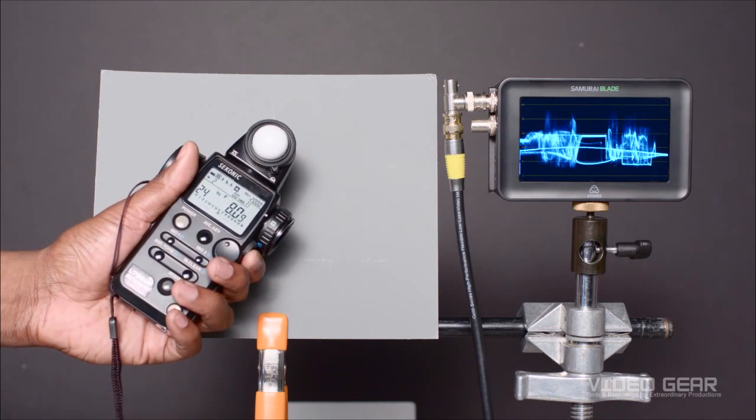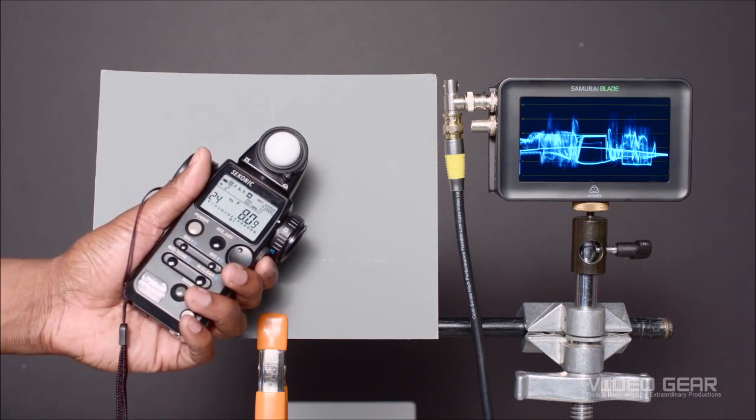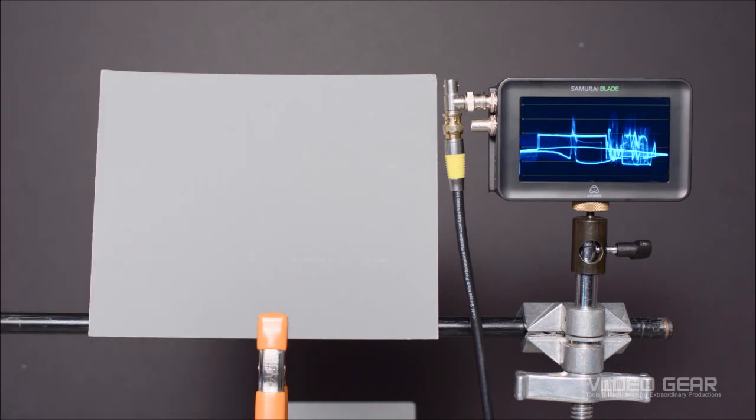Then we'll take a light meter reading at the position of our gray card. This reads 8 and 9 tenths, so we'll set the lens aperture to that setting.